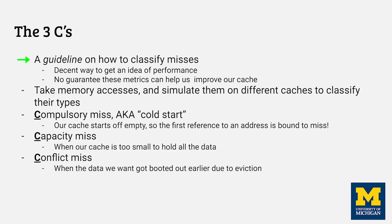Now let's introduce the three Cs. It's important to note that these are just guidelines on how to classify misses — they give us a good general idea, but following the recommendations on how to reduce each type of miss does not guarantee performance improvements. We take a series of memory references and run them on three simulations, each detecting different types of misses. Our first type is the compulsory miss, or cold start miss — this is because our cache starts off empty, so the first reference to an address must miss. The second type is a capacity miss, meaning that if our cache was large enough, we would have had a hit. Finally, we have the conflict miss, where the data we want got replaced due to the associativity of the set, since another address is mapping to the same line and conflicting with it.